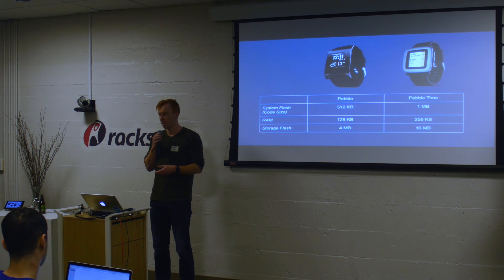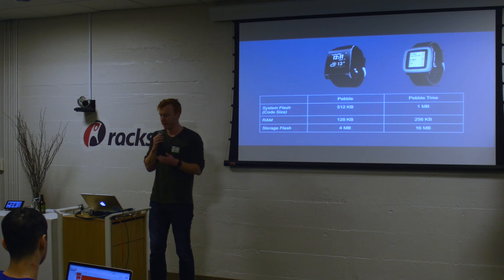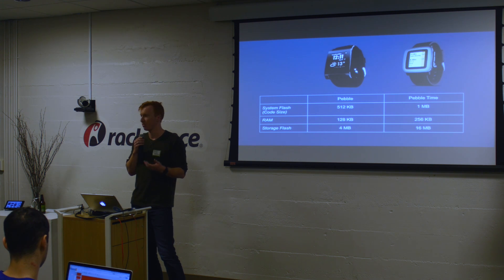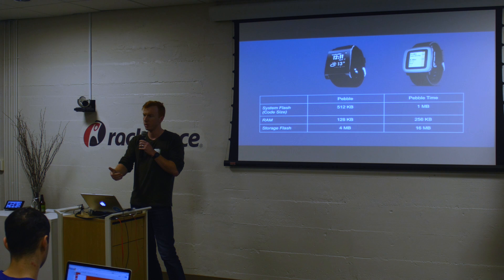To put some numbers on these things: for Pebble and Pebble Steel the numbers are all the same, and for Pebble Time, Pebble Time Steel, and Pebble Time Round the numbers are all the same — so there are two generations of product. For Pebble Time, all of the storage is roughly double. The biggest roadblock during this time was the system flash space. When developing for Pebble Time, we ran up against that limit enabling all the new things for Firmware 3.0, and we basically created a firmware that was too large to even fit on Pebble.